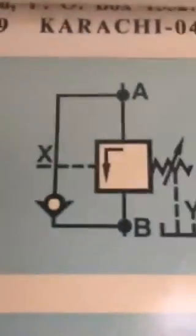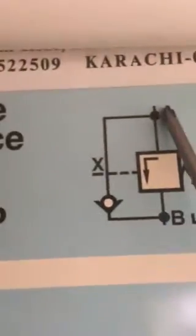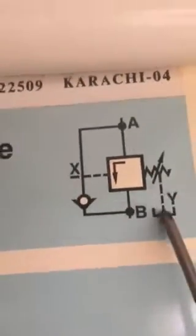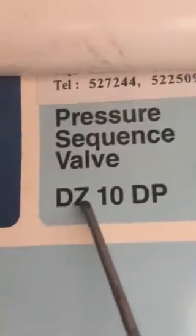This is the pressure sequence valve, and this is the schematic diagram of the pressure sequence valve. As you can see, port A, port B, X pilot line, and Y is the drain line. The model is DG10DP. This is the schematic diagram, and this one is the pictorial diagram.